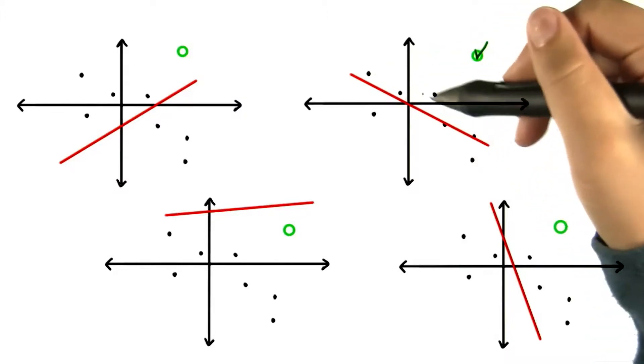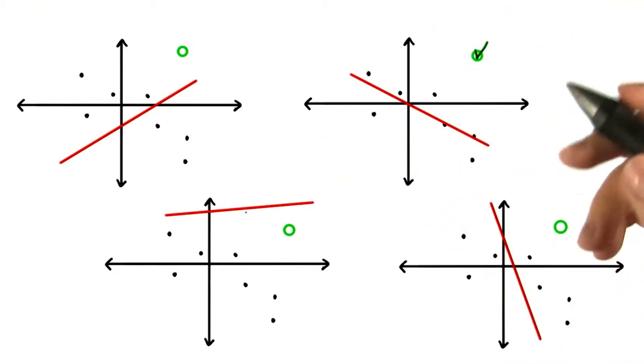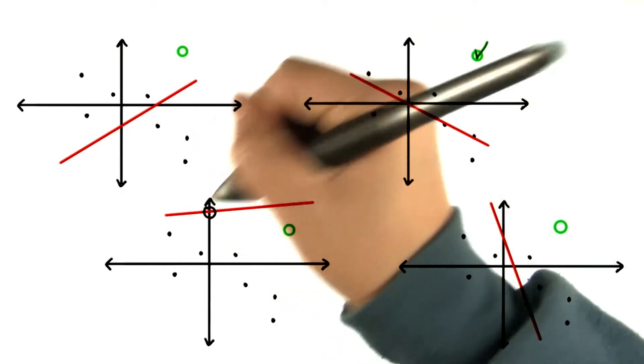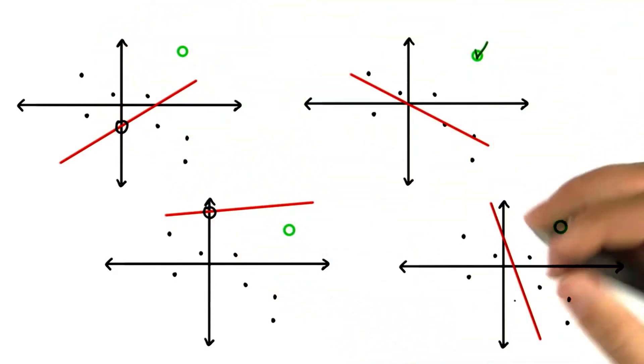Definitely this one. The trend is downward sloping, so it can't be any of these positive slopes. And it definitely doesn't look like the data go through this value up here or here. And this one looks like it slopes downward too steeply.